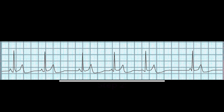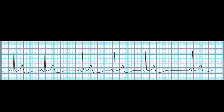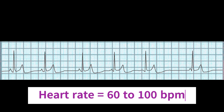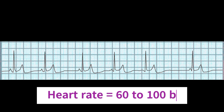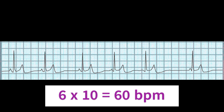Step 2: Determine the heart rate. In multifocal atrial rhythm, the heart rate is between 60 to 100 beats per minute, similar to a normal sinus rhythm. In this example, since this rhythm is irregular, we use the 6-second method. We have a 6-second strip with 6 QRS complexes. We multiply 6 by 10 and we get 60 beats per minute.